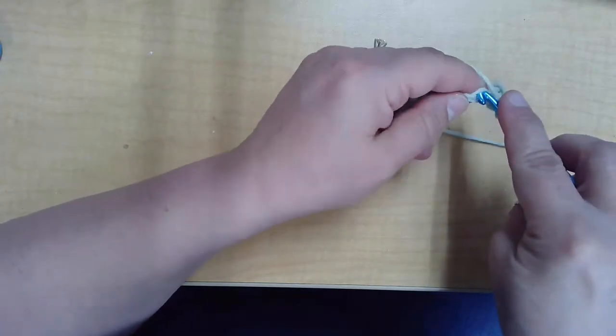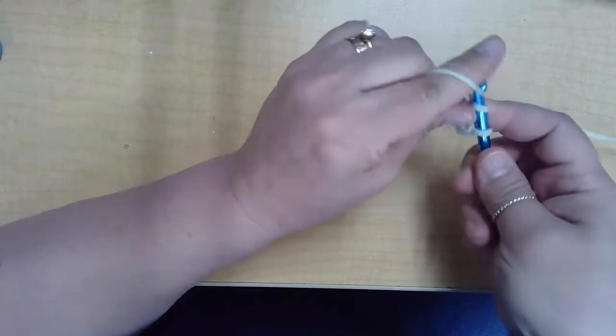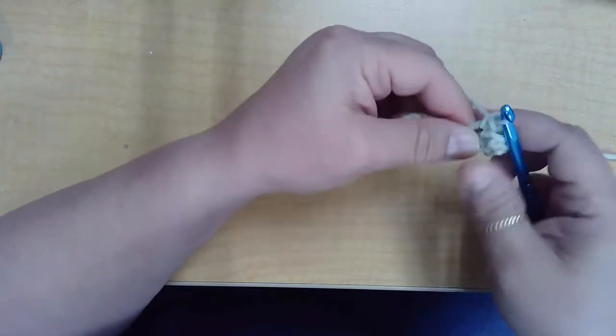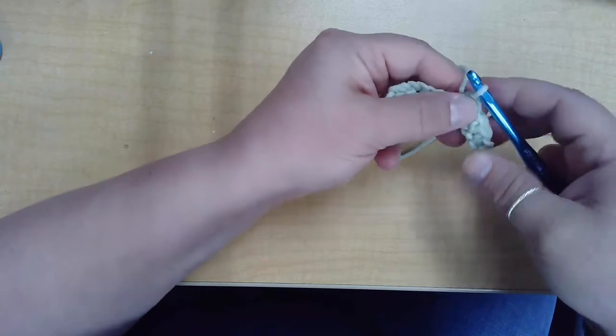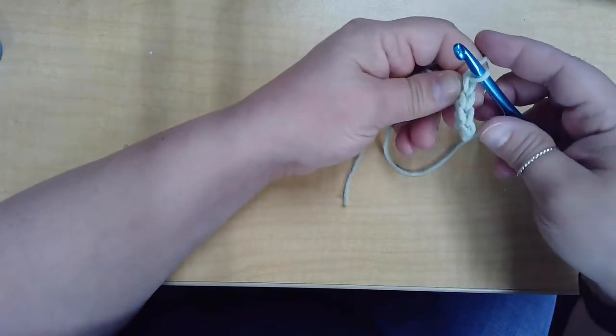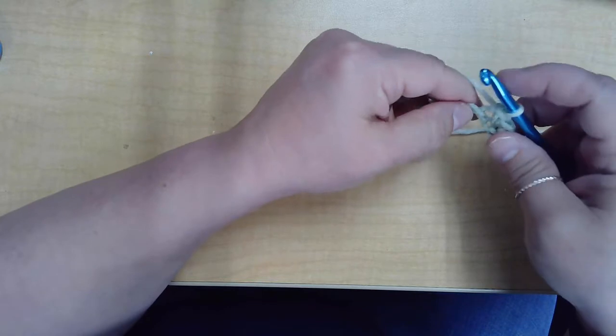So into the next chain space, yarn over, pull through, yarn over, pull through two loops. And you can see where it's forming the characteristic V's.